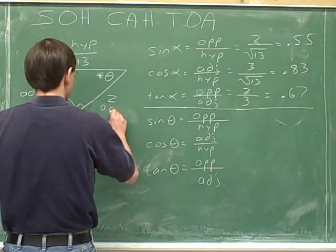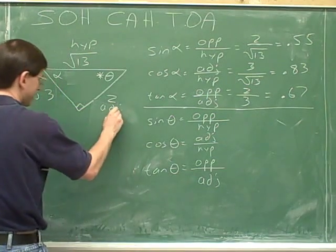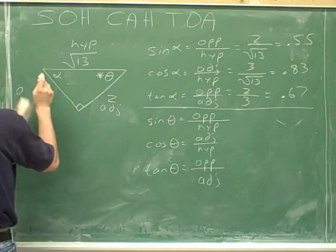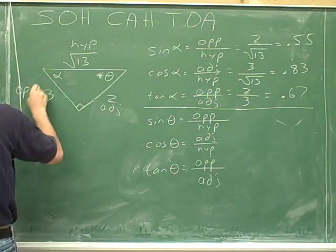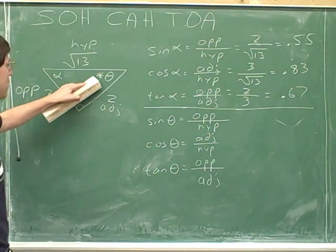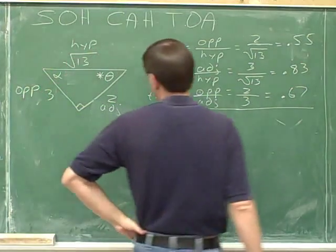The side that used to be the opposite is now going to be adjacent. You can see that this side is now adjacent to the asterisk, and the side that used to be adjacent is now going to be opposite. You can see that the side of length 3 is opposite to theta, but the hypotenuse doesn't change.